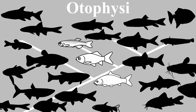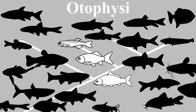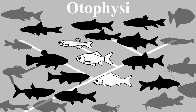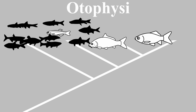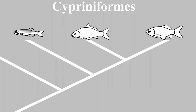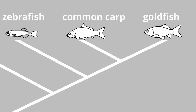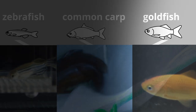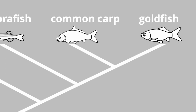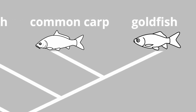Let's learn about the phylogenetic position of goldfish. Although the phylogenetic relationship of the Otophysi group is difficult, scientists have agreed that goldfish belong to the family Cypriniformes. This family includes three species that have been intensively researched in experimental biology: the goldfish, common carp, and zebrafish. While goldfish and common carp are closely related, zebrafish are more distantly related to them.